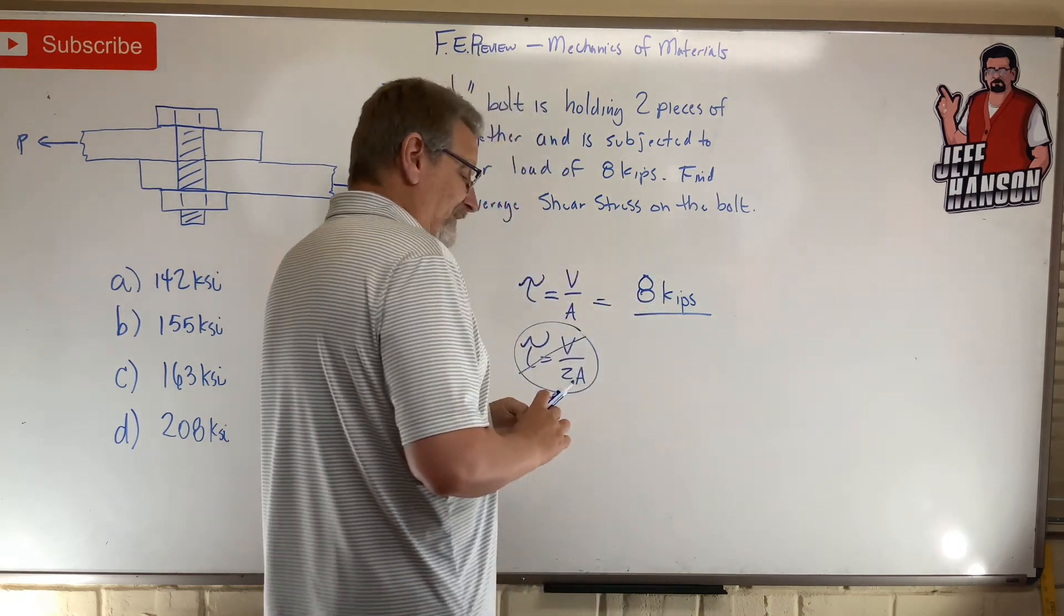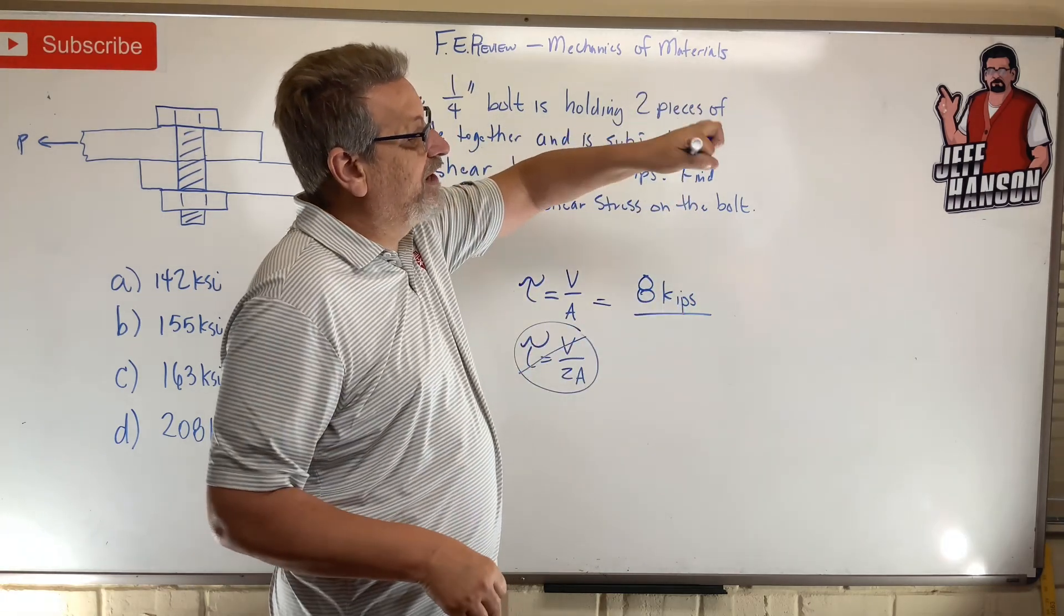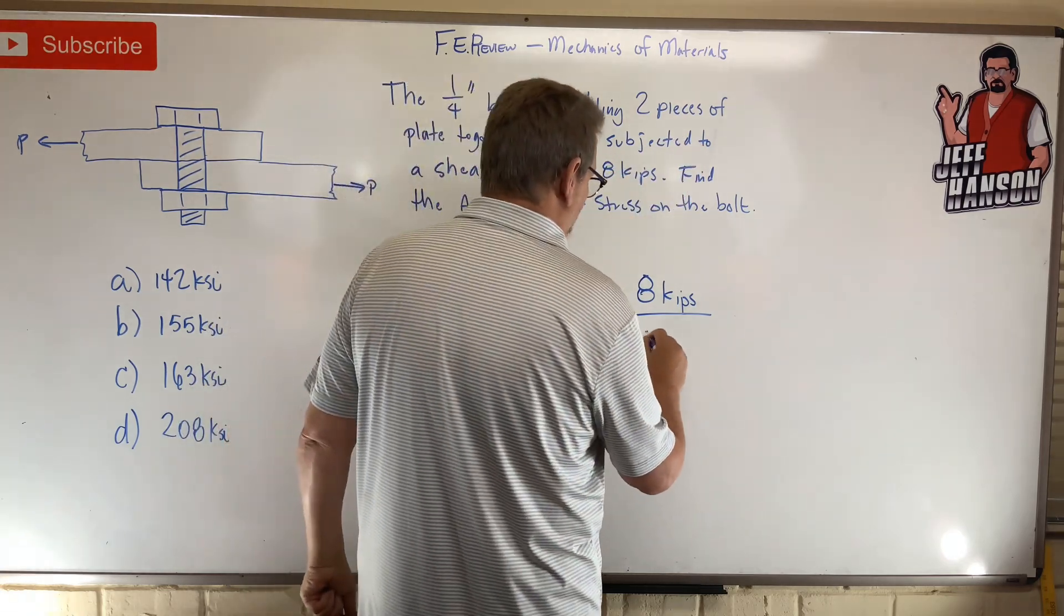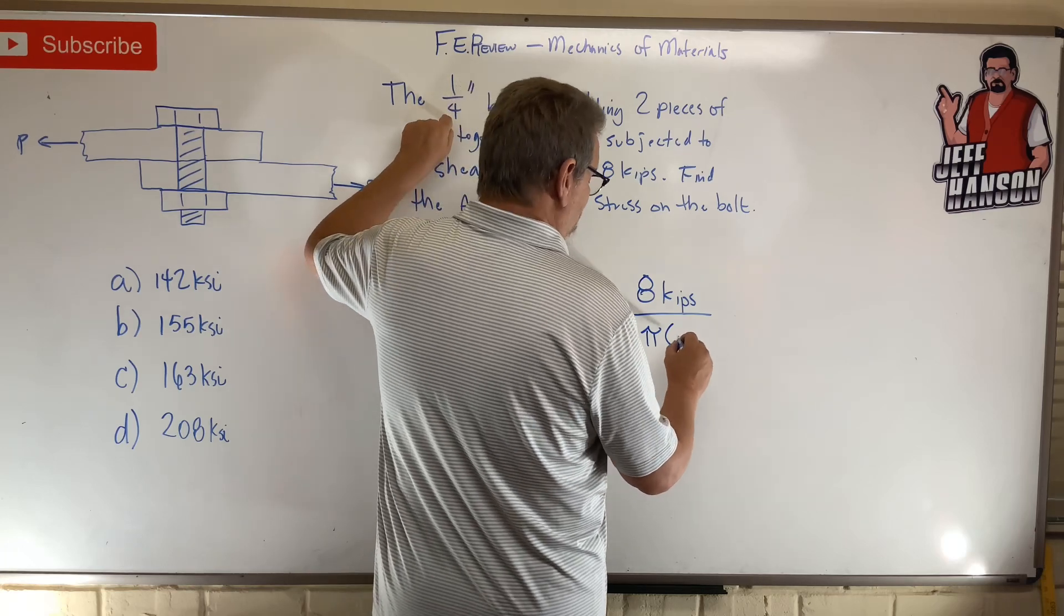How much bolt do I have to shear in half? What's the cross-sectional area? It's just a circle. It's pi times r squared, and the diameter is a quarter inch, so 0.125 squared. Here we go, this is in inches squared down here.